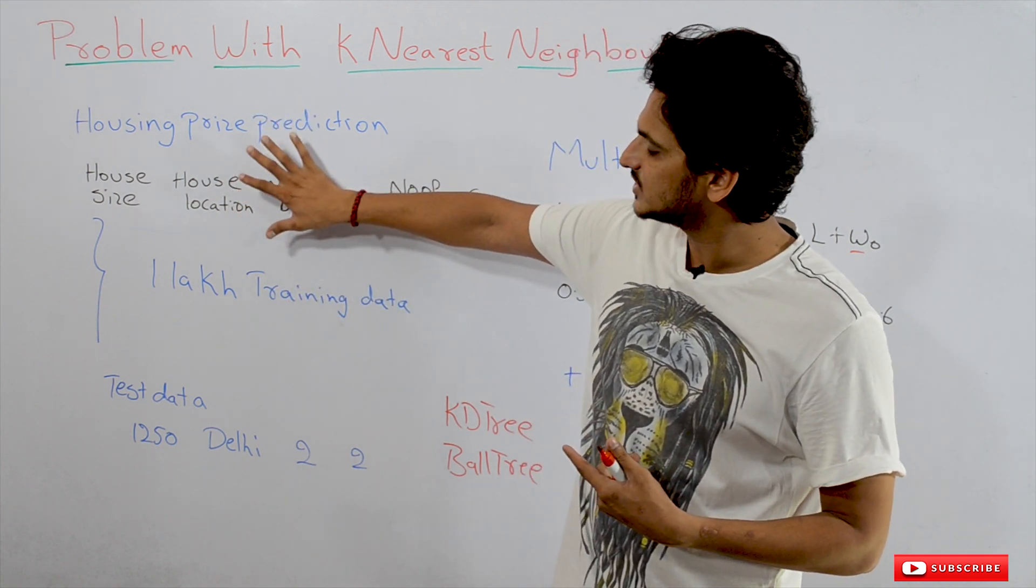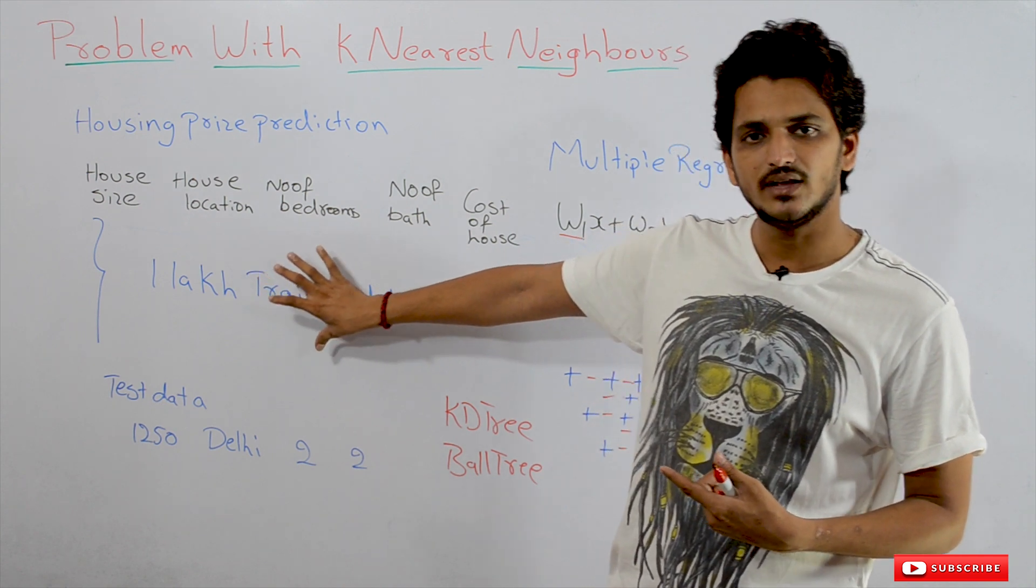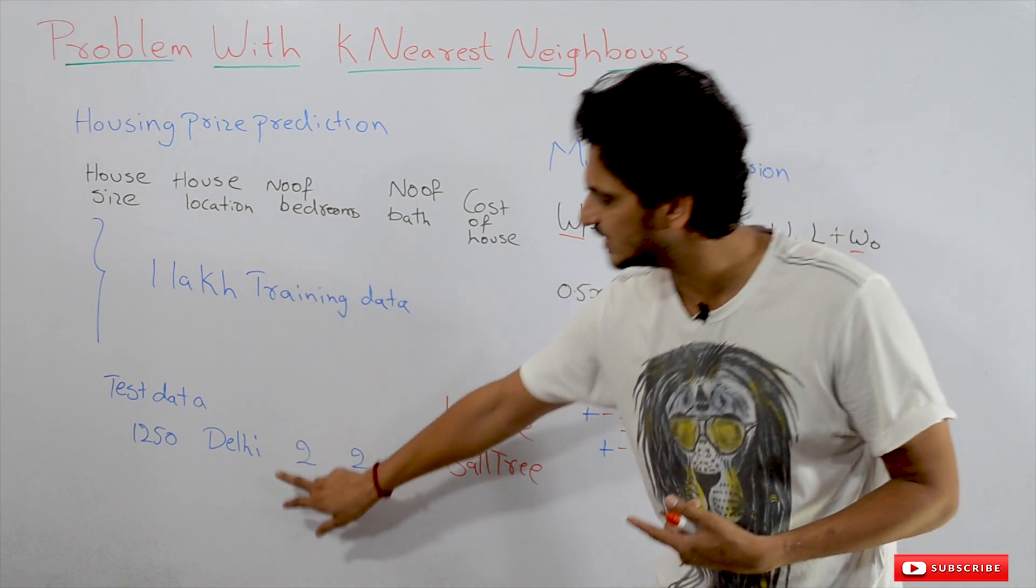K-Nearest Neighbors always needs the entire one lakh training dataset to identify the distance between every point and the testing data point.